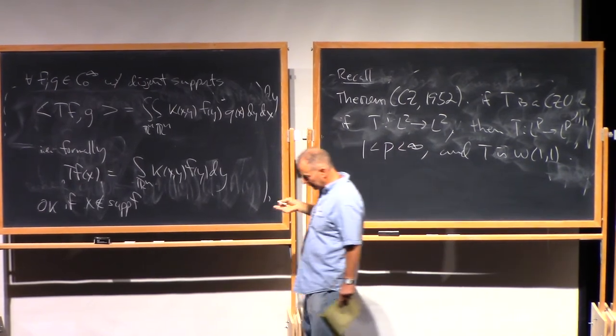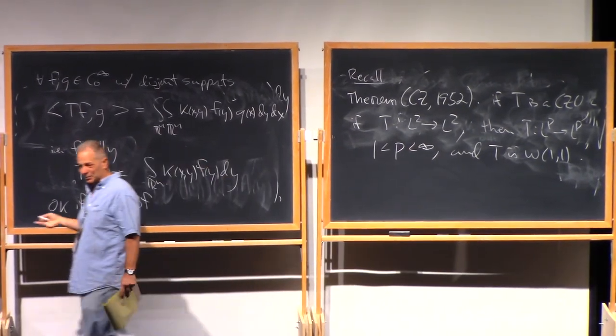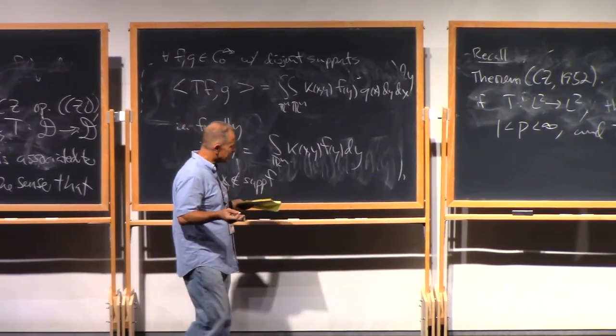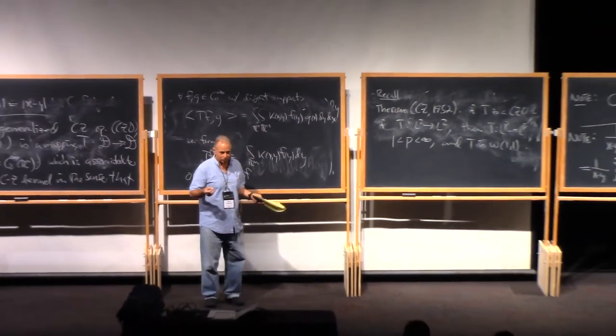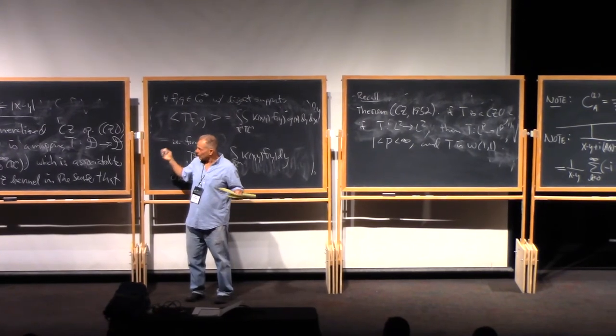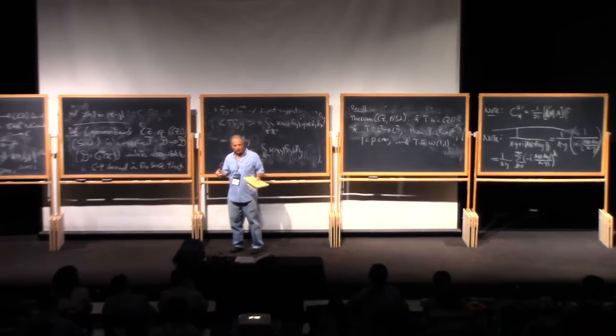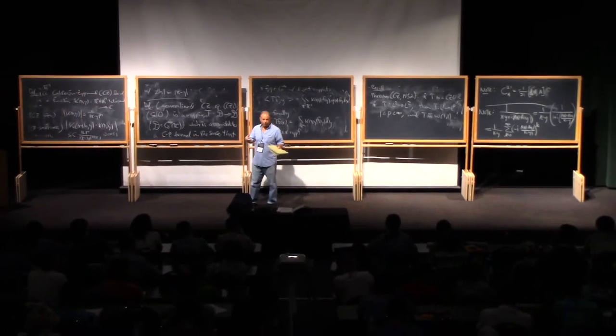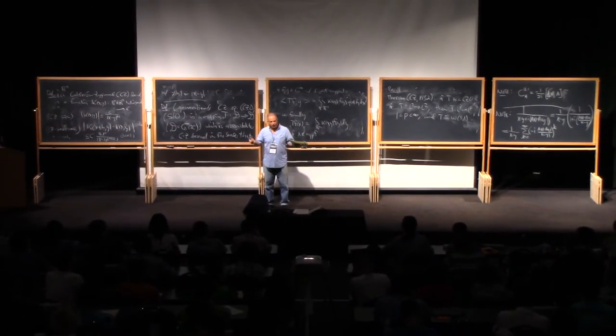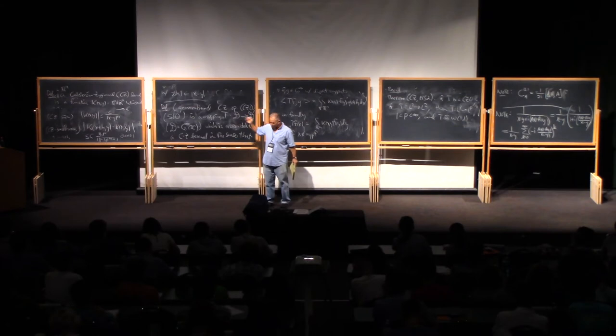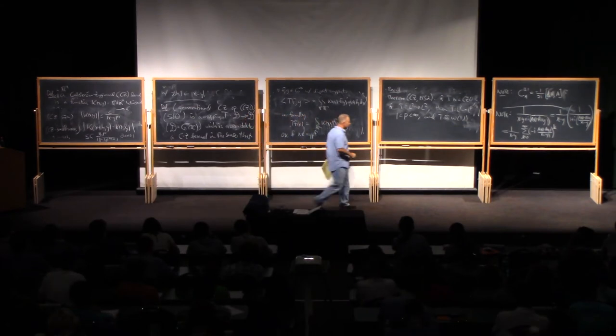So, the theorem is that if the singular integral is bounded on L2, then it is bounded, or it extends to a bounded operator, on L^p, 1 < p < ∞, and it's also of weak type 1-1. Of course, in 1952, Calderon-Zygmund were only looking at convolution type operators. But in fact, their proof works the same way. Convolution is really only an extra help in proving the L2-boundedness when you can use Plancherel. Once you have L2-boundedness, L^p bounds work the same way whether it's convolution type or not. It's just an artifact of these Calderon-Zygmund kernel conditions plus the Calderon-Zygmund method.